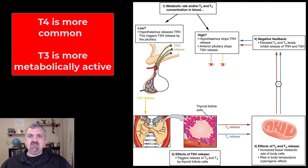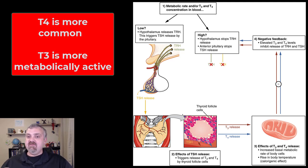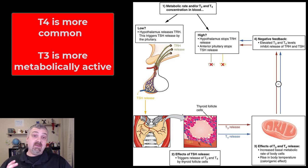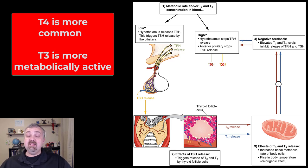I like to think of T4 as almost like a storage form of thyroid hormone. T4 is called thyroxine, and it's called that because it has four iodines. T3, or triiodothyronine, has three. Cells have enzymes that can remove that fourth iodine, making thyroid hormone more metabolically active. The huge majority of your thyroid hormone is actually going to be bound. About 99% of thyroid hormone at any moment is bound to different proteins, with thyroxine-binding globulin being the most important one.